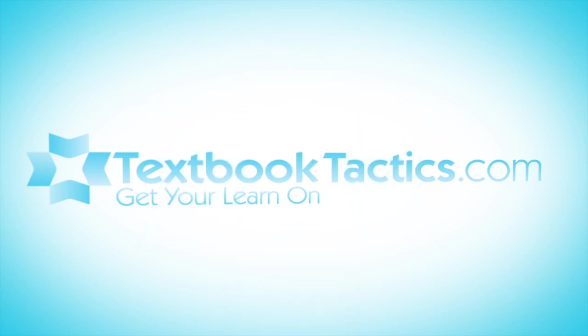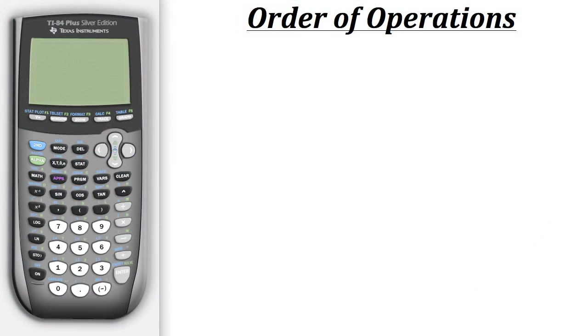For this tutorial we're going to look at some examples involving the order of operations. Let's take a look at the first example. Here we have the expression 3 times 12 plus 4 divided by 2.